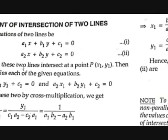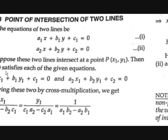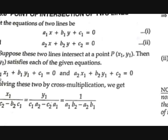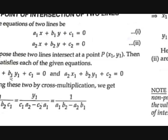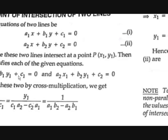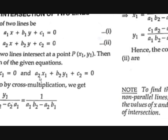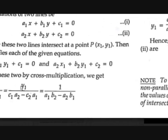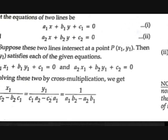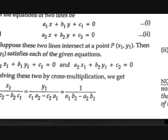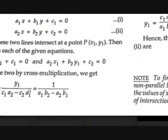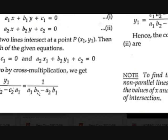Let's take two equations of straight lines. Suppose these two lines intersect at point P(X1, Y1). Since P satisfies both equations: A1·X1 + B1·Y1 + C1 = 0. If we solve these equations by cross multiplication, we get X/(B1C2−B2C1) = Y/(C1A2−C2A1) = 1/(A1B2−A2B1).